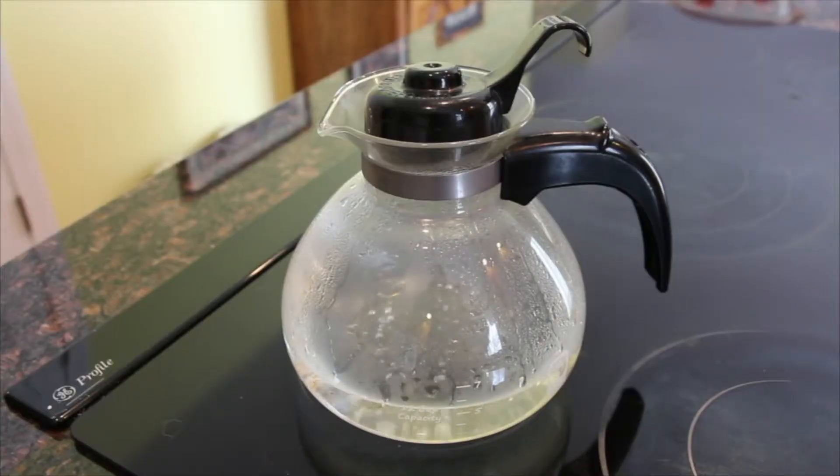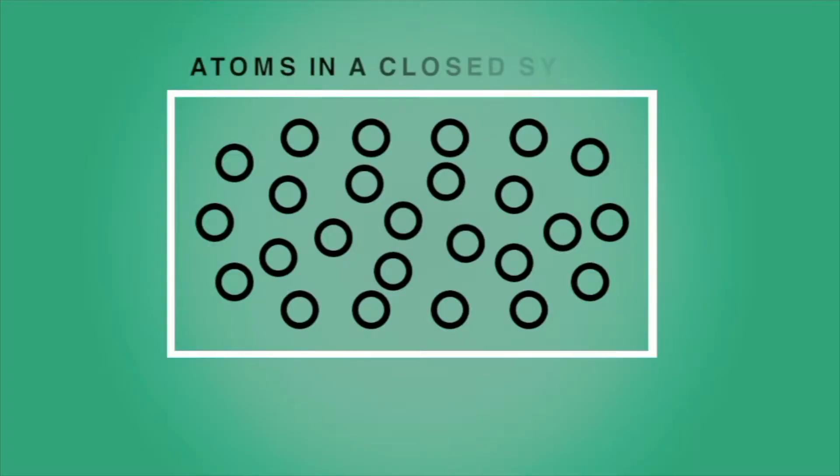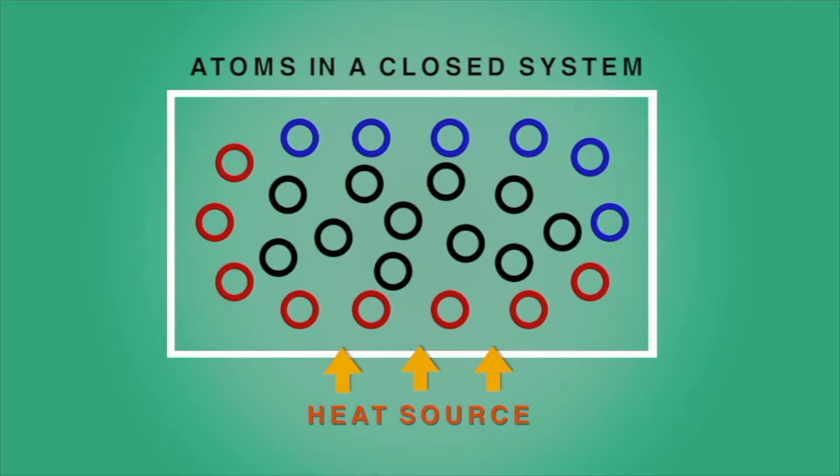When a substance is heated, the kinetic energy in its atoms and molecules increase. The increased motion causes the atoms to move apart. In a closed system, as the particles gain energy, they spread out, decreasing the density of the medium and this causes them to move upward. As they rise, atoms lose heat. The cooler atoms and molecules move closer together, increasing the density of the medium and sink down.